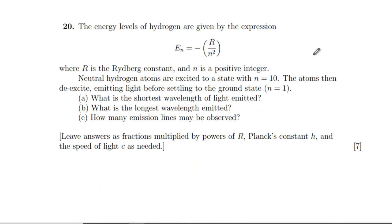Question 20. The energy levels of hydrogen, this looks fun, are given by that expression. Where R is this constant that I've never heard of. N is some integer. Neutral hydrogen atoms are excited to a state with N equals 10. The atoms then de-excite, emitting light before settling to the ground state N is 1. What's the shortest wavelength of light emitted? Well, our shortest wavelength is going to be highest energy. So short wavelength implies high energy, which means we want our biggest transition. So that's going to be, it's HF. They're telling us to put it in terms of Planck's constant.